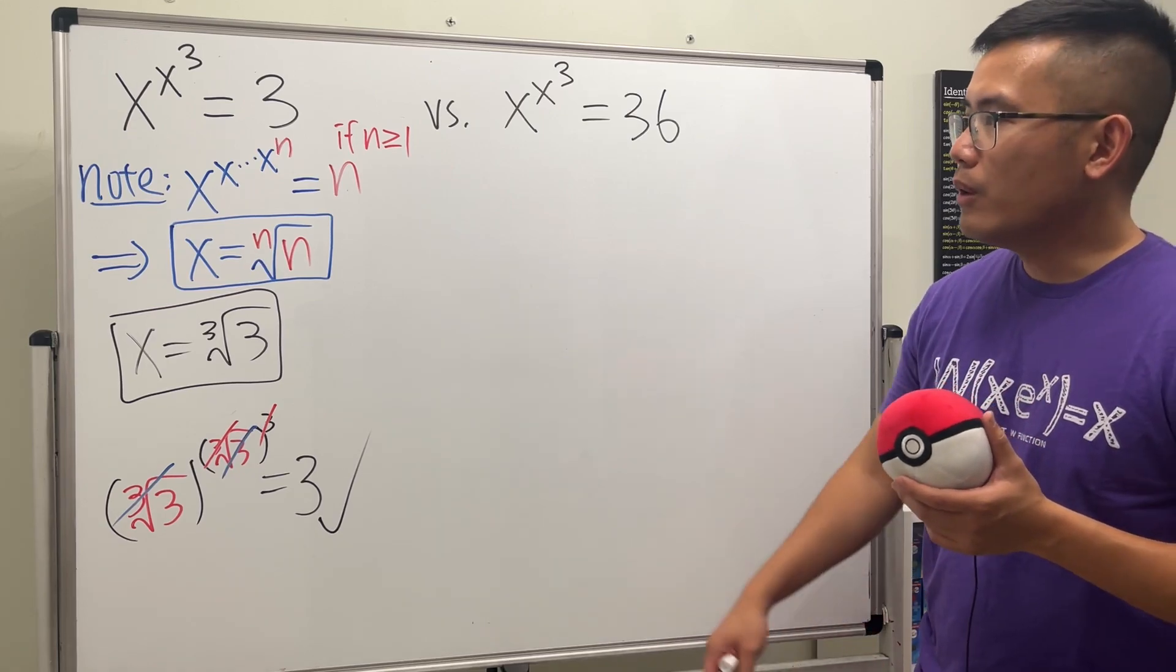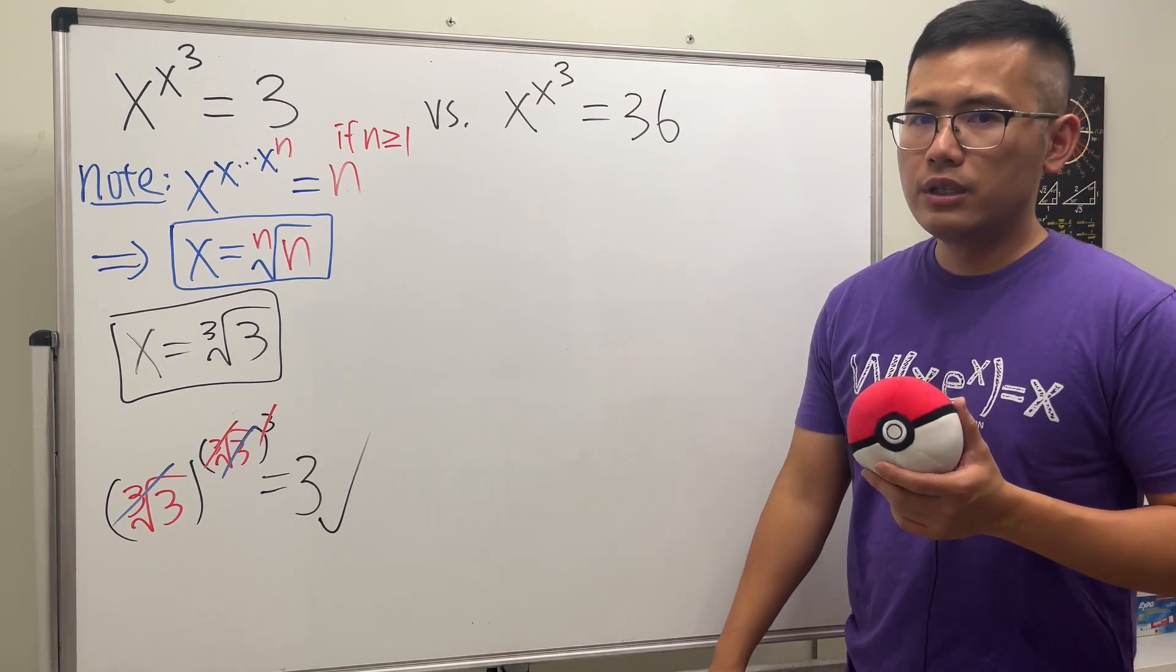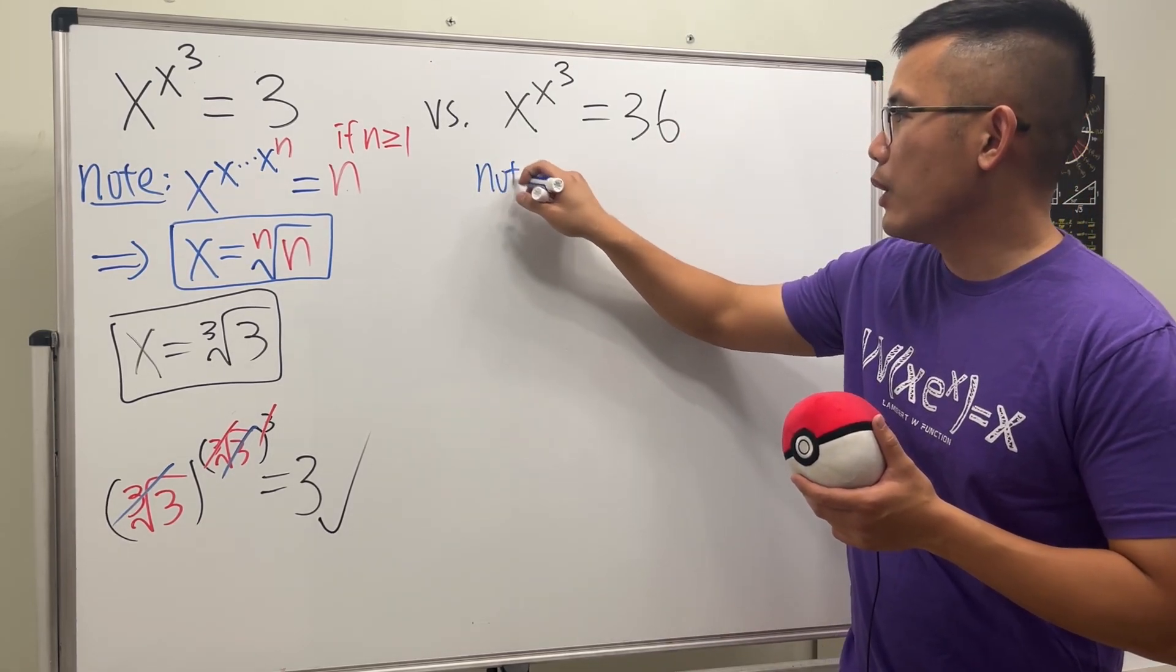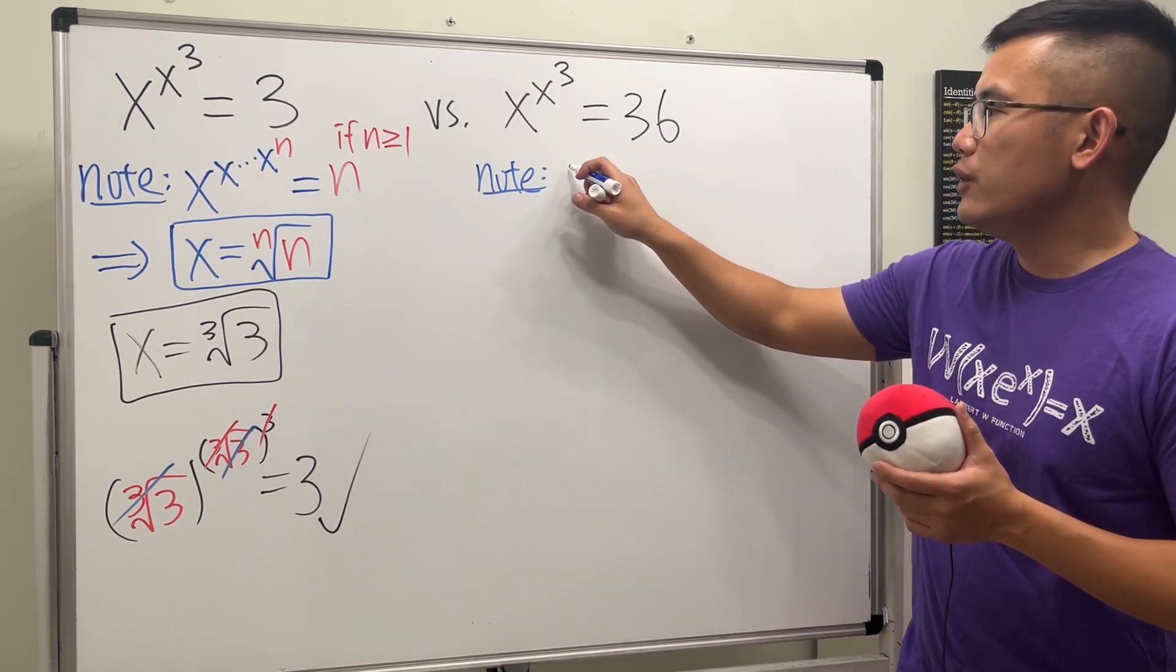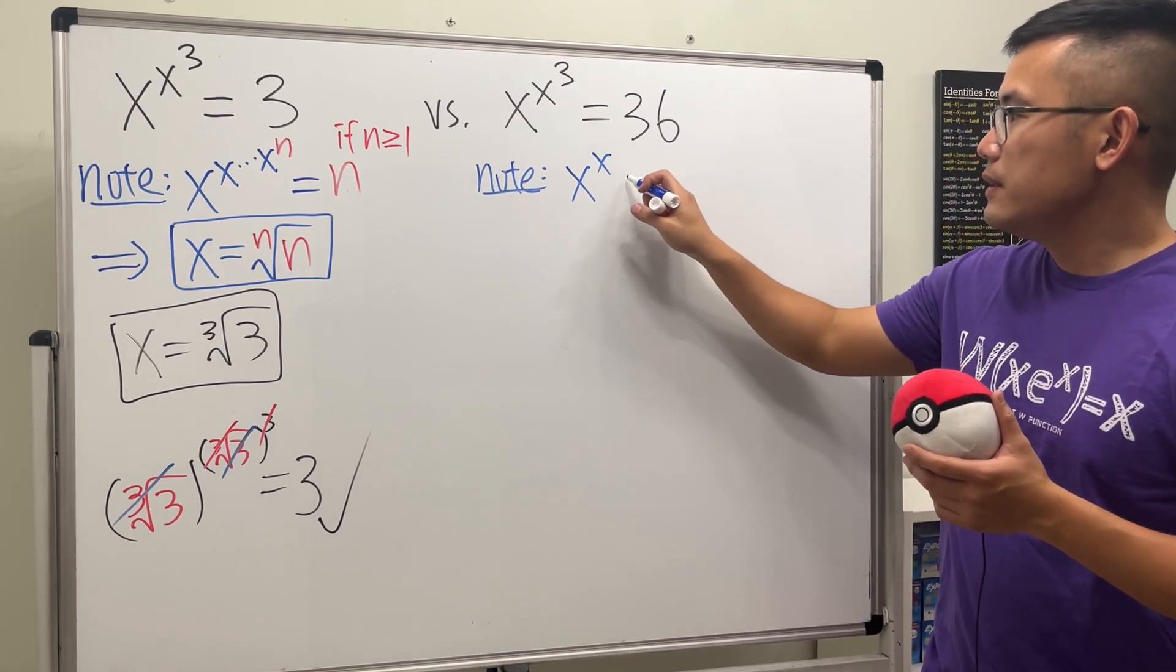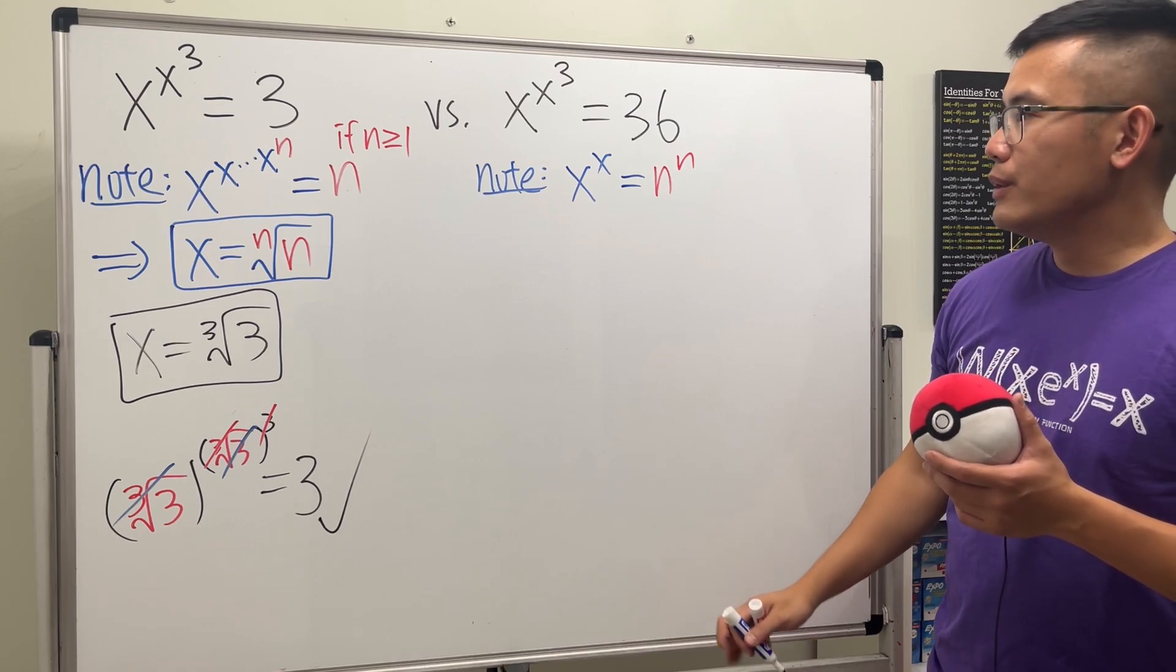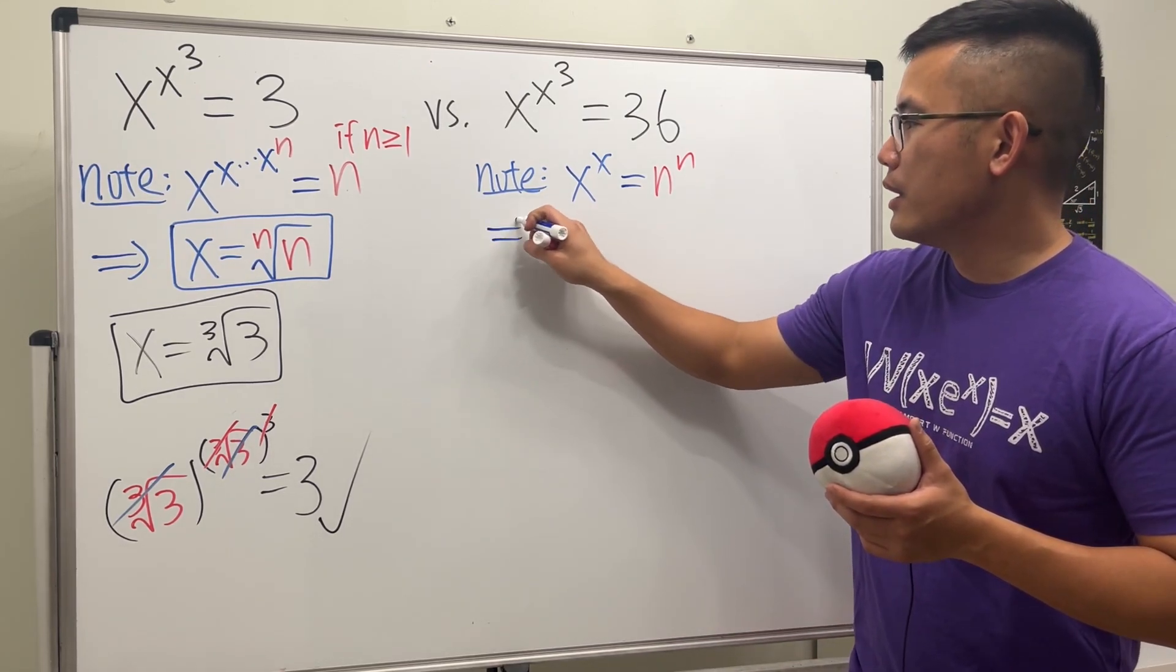What do we do? Well, I told you guys a very nice situation here. I'll also tell you guys a very nice situation whenever we are dealing with this kind of equations. Whenever we have the equation if we have x to the x power, just two x's, if this is equal to n to the n.